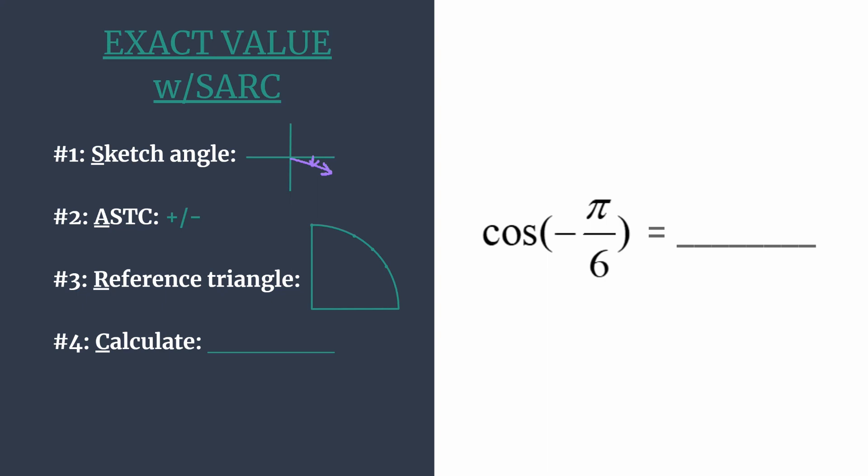If you needed to, you could have found a coterminal angle by adding 2 pi. Or in this case, with a common denominator, that would be 12 pi over 6. So to find that coterminal angle, you would simply take your angle and add 2 pi in the form of 12 pi over 6 with that common denominator. And you would get a coterminal angle, 11 pi over 6.